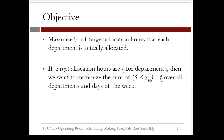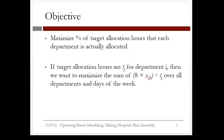The objective of this problem will be to maximize the percent of target allocation hours that each department is actually allocated. So if target allocation hours are T_j for department J, then we want to maximize the sum of 8 times X_j_k divided by T_j, over all departments and days of the week.